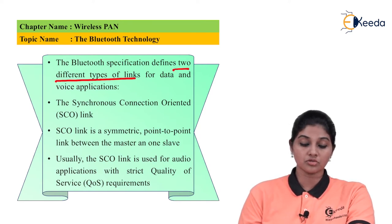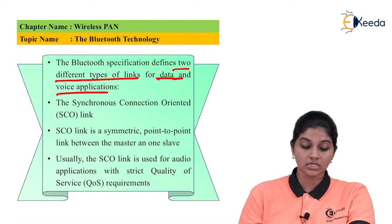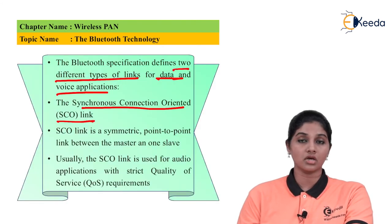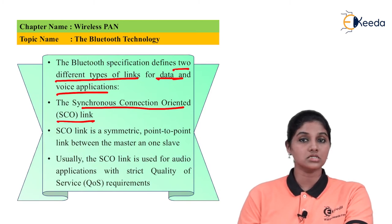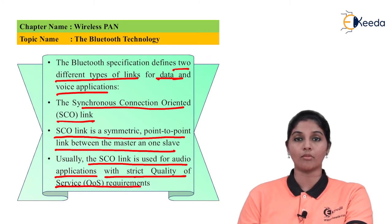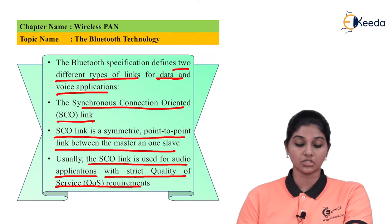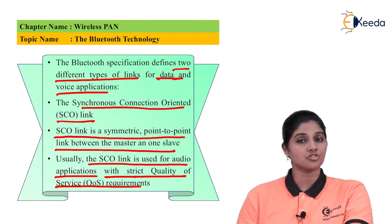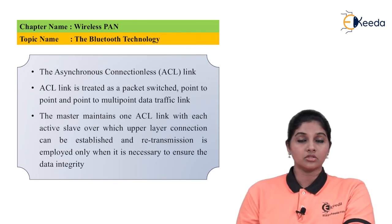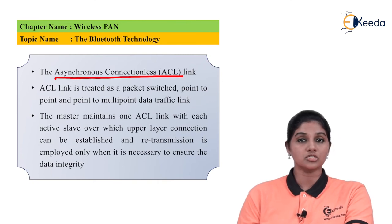The Bluetooth specification defines two different types of links for data and voice applications. The first is Synchronous Connection-Oriented (SCO) link, and the second is Asynchronous Connectionless (ACL) link. The SCO link is a symmetric point-to-point link between the master and one slave, used for audio applications with strict quality of service requirements, specifically for voice communication.